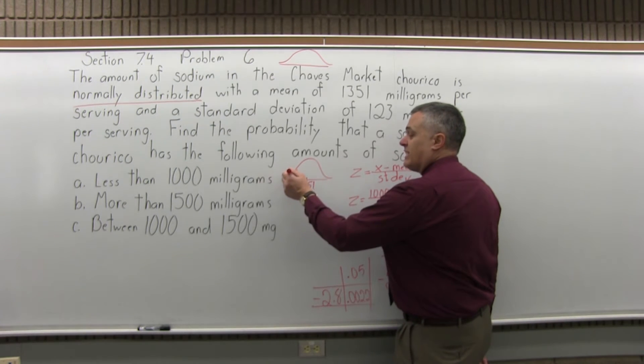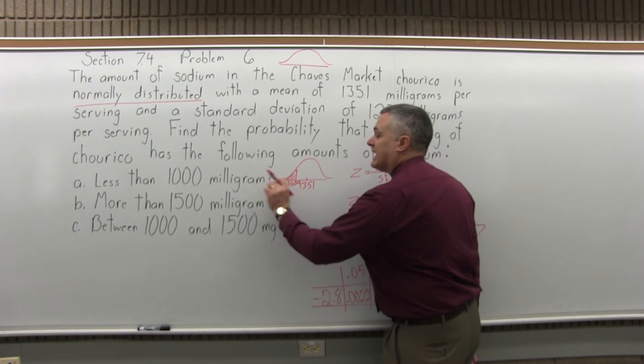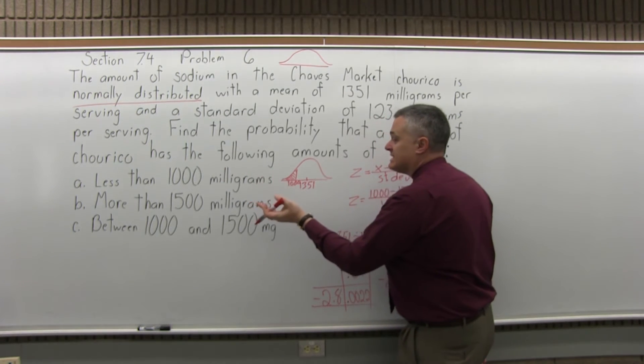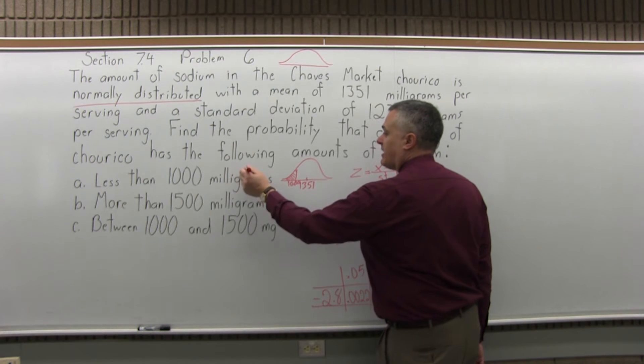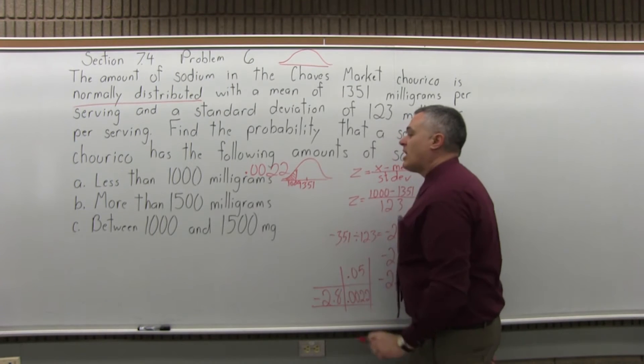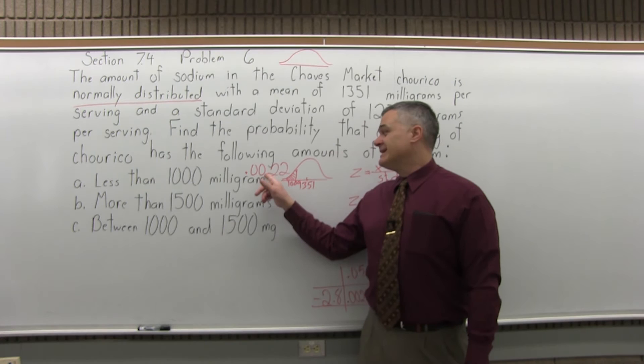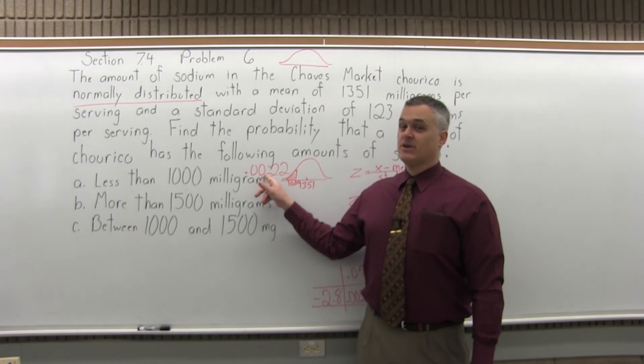So that .0022 happens to be the area that's to the left of or less than the 1,000, which is exactly what we want. So the answer to part A is .0022. The probability that a serving of Charves would have less than 1,000 milligrams is about a quarter of a percent. It's very unlikely.